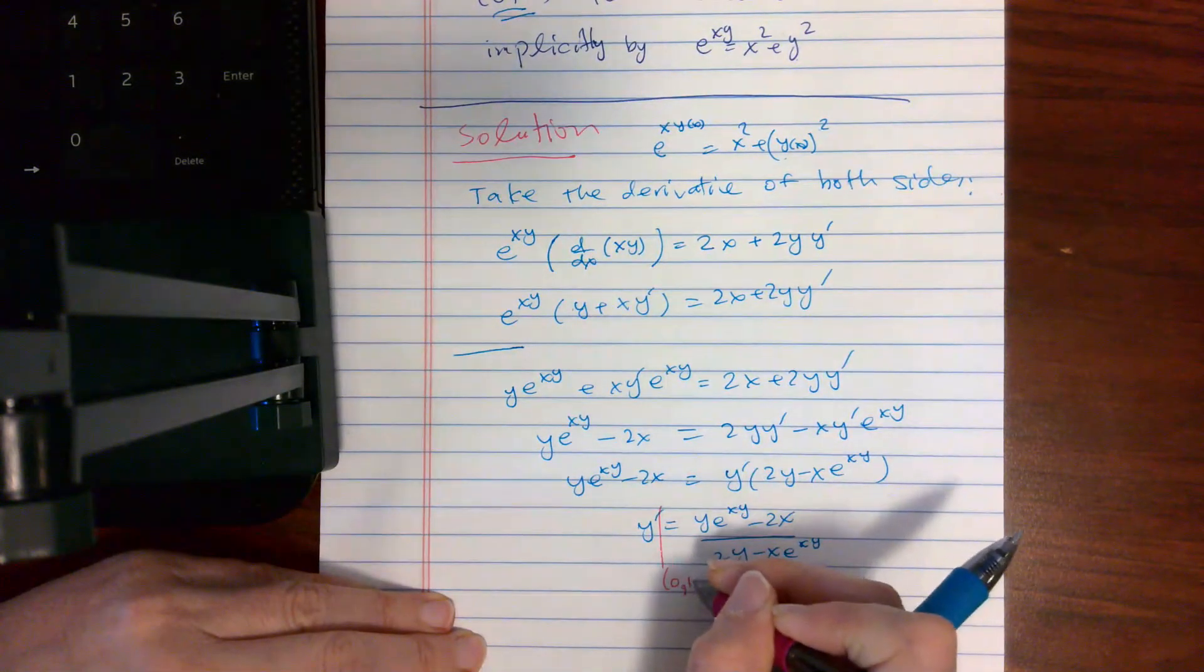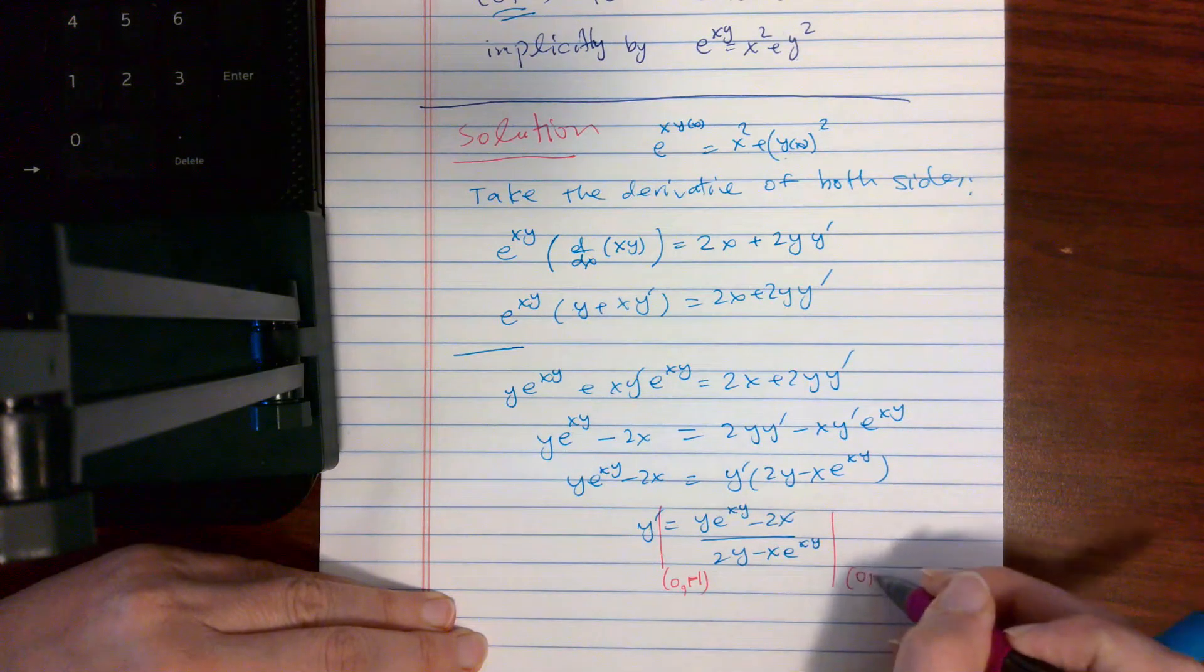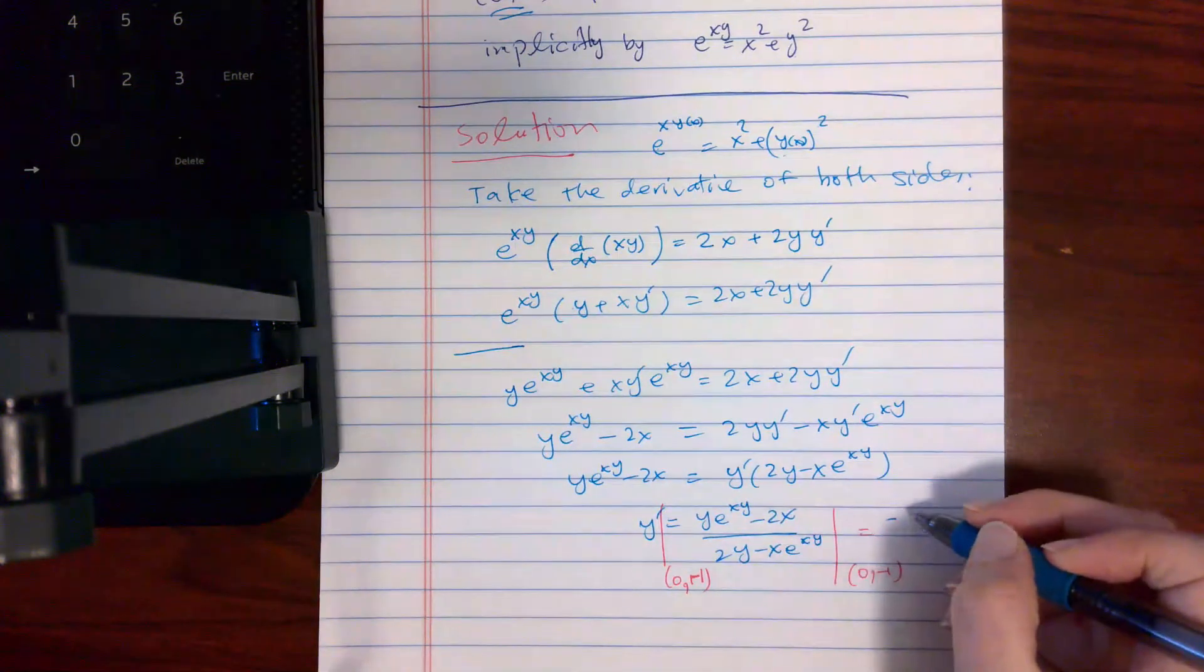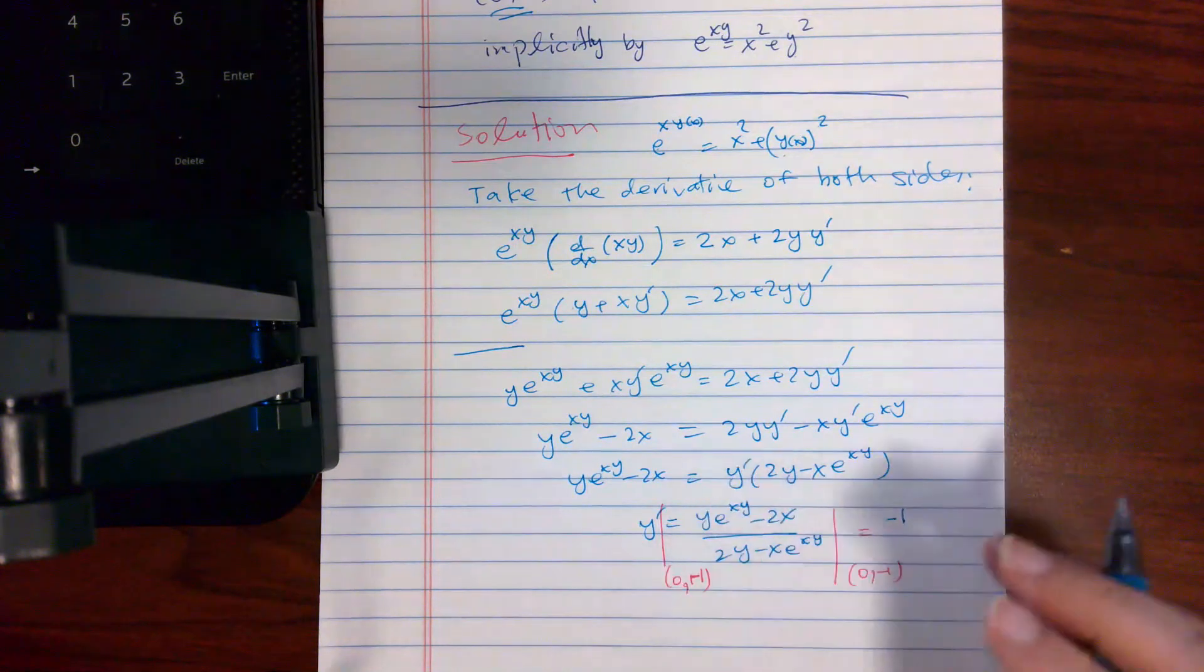To get negative e to the power 0, e to the power 0 is 1, negative 1 minus 0.